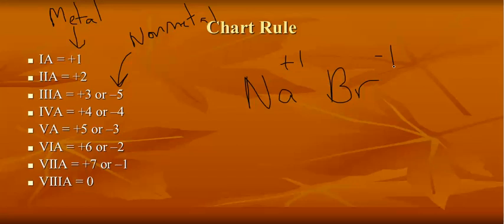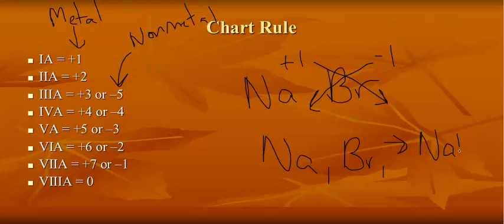To write a neutral compound, the easy way is just to cross charges. So the positive comes down as a subscript behind bromine, and the negative comes as a subscript behind sodium. We just get rid of the negative sign. And so we have Na1Br1. We can just leave out the 1s and write NaBr. That's the neutral compound for sodium with bromine.